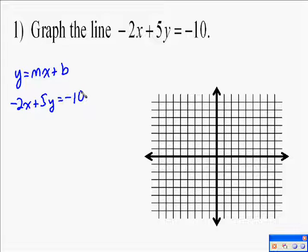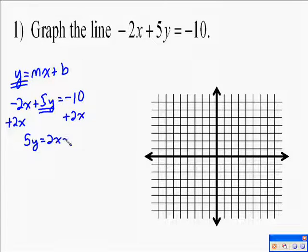So how do I solve negative 2x plus 5y equals negative 10 for y? The first thing to do is get the 5y by itself. When you solve an equation, you always get that variable by itself. So we have to get rid of the negative 2x, so we're going to add 2x. Negative 2x plus 2x is 0. When I do this, I'm going to go ahead and put that 2x in front of the negative 10.